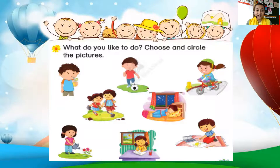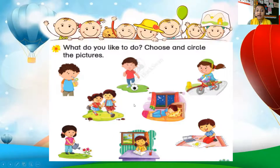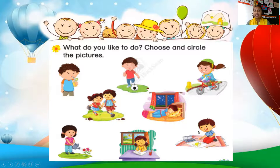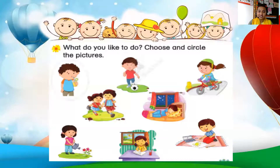Now we have a worksheet here. What do you like to do? Choose and circle the picture. We have so many pictures here — like a boy drinking juice, playing with a ball, riding a bicycle, going to school or going outside, sleeping, watching the garden, writing and drawing. These are the activities. Now you have to choose what you like — choose an activity that you like.